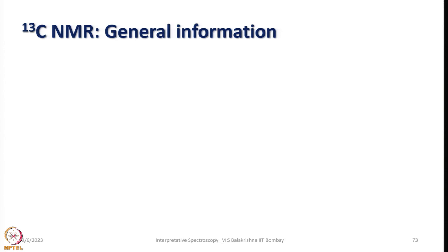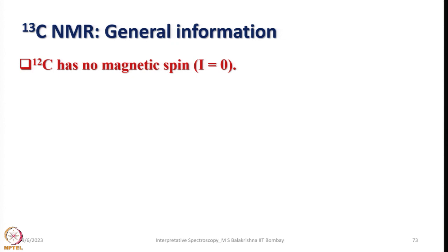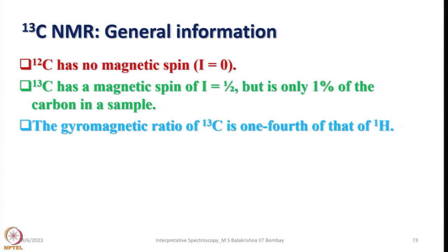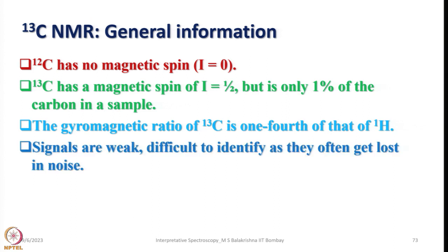Now let us look into general information about 13C NMR. Carbon has two isotopes; only 13C has a non-zero nuclear spin. 12C has no magnetic spin (I = 0), constituting about 99% of carbon, while the remaining 1.1% is 13C with spin I = 1/2. The gyromagnetic ratio of 13C is one fourth that of hydrogen, so the signals are very weak and difficult to identify, often getting lost in noise — especially quaternary carbons — if enough sample is not taken.